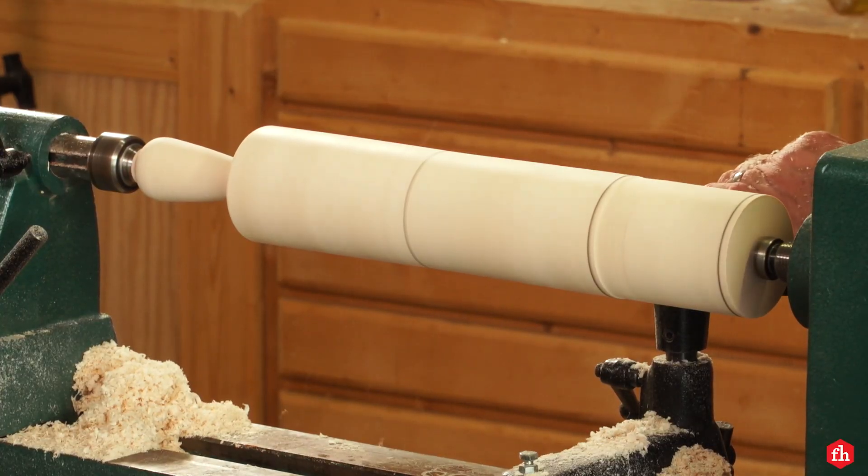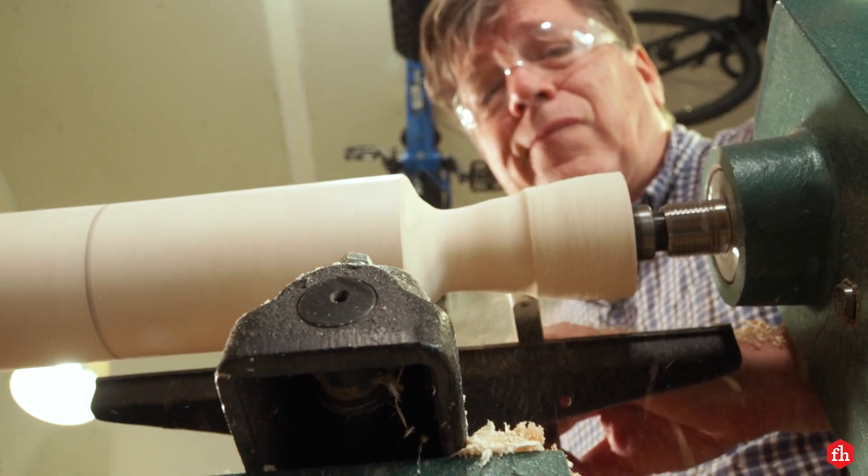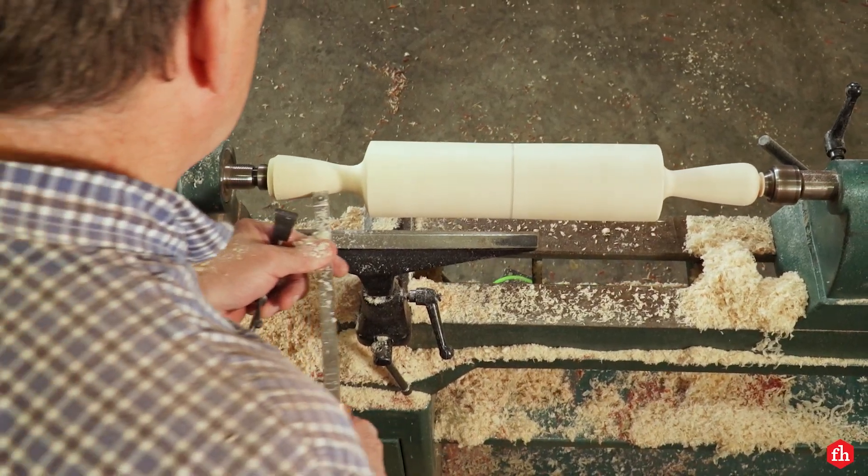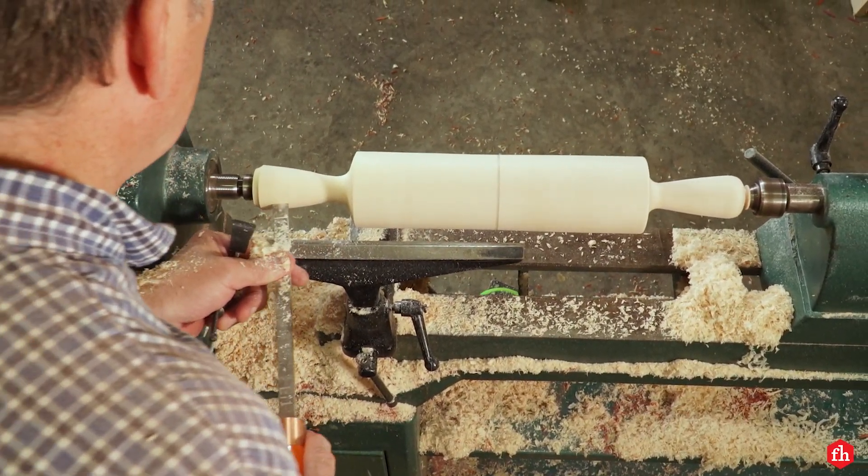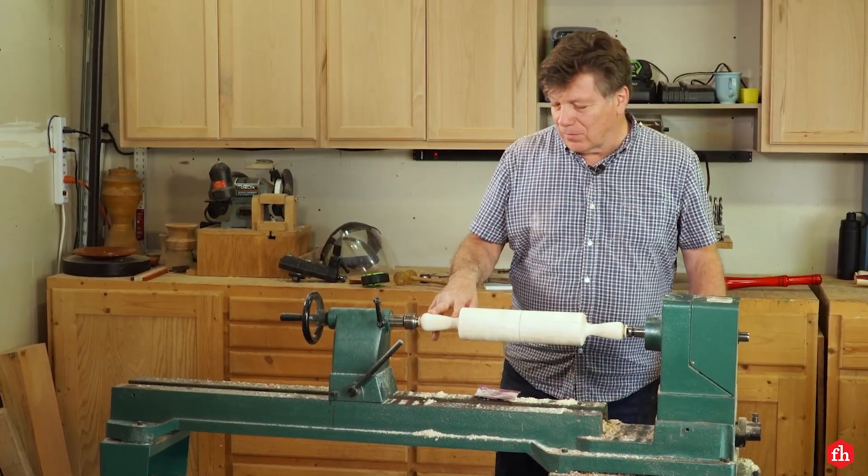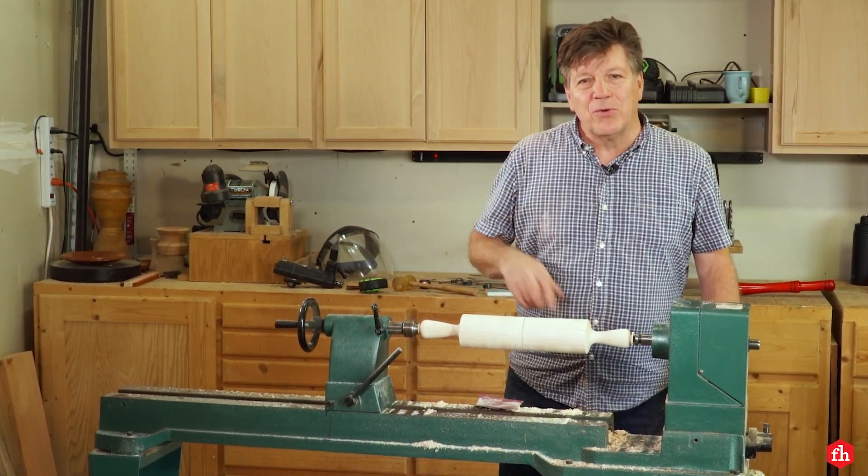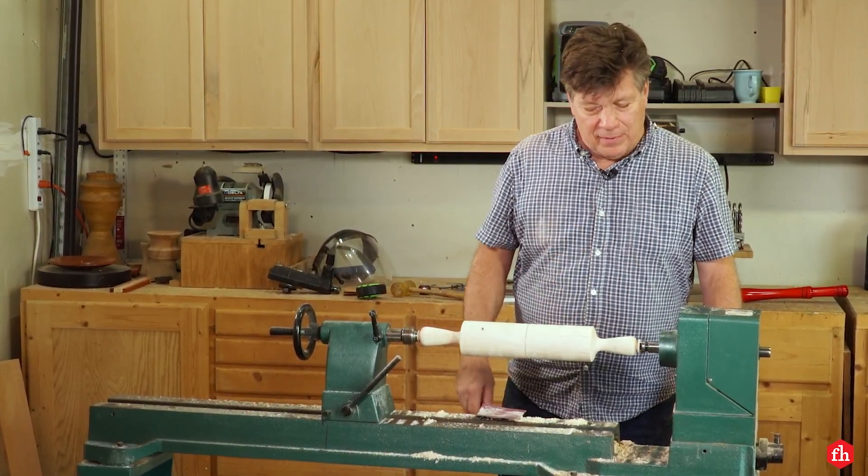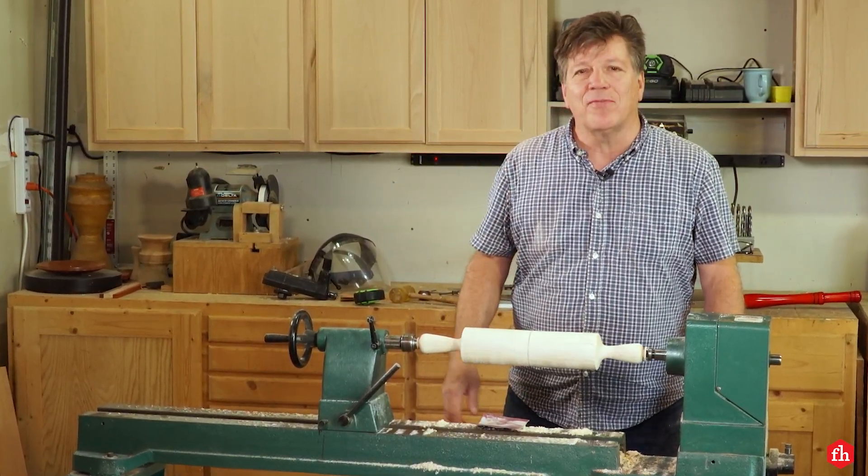Again, using the detailing tool, I shape the ends of the handles while creating a groove, getting it as close as I can before it's ready to part off. Now I have the handles all turned. All I need to do is sand it and put some oil on it and then part the ends off. We're finished.